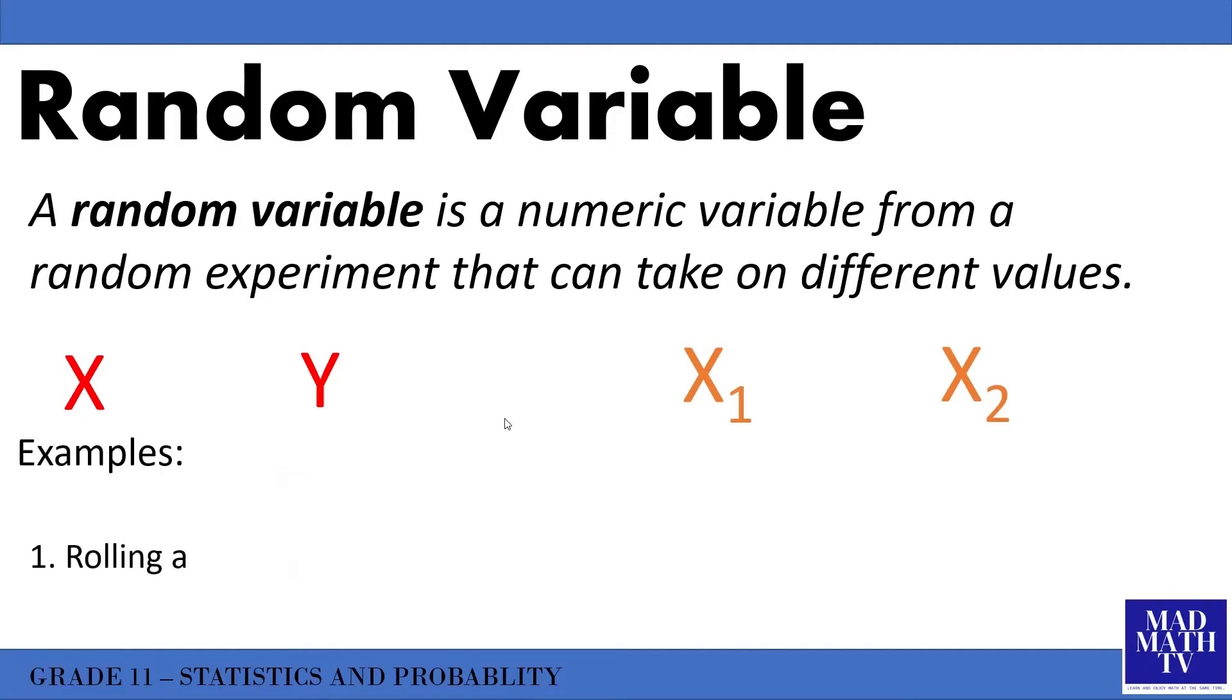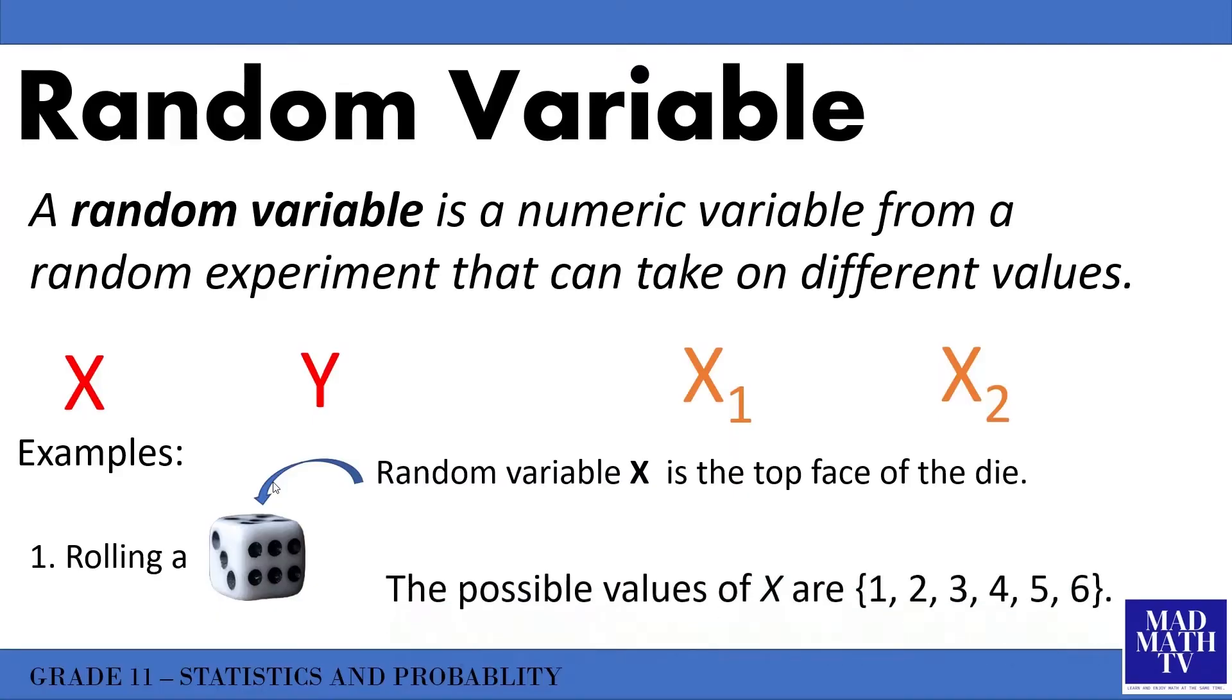Let's consider this example: if we roll a standard die and we are concerned about what appears on the top face, we say that random variable X is the face up value of the die. What are the possible values of X? Of course, the possible values of X are 1, 2, 3, 4, 5, and 6, which are the number of dots of each face of a die.